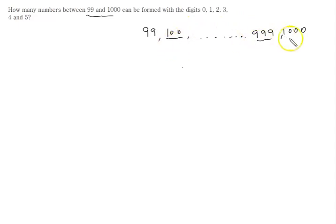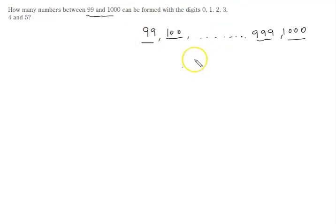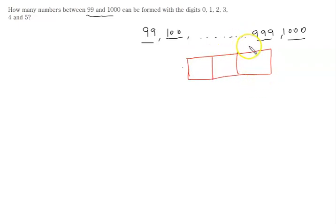So we are talking about three-digit numbers. We can give three compartments for a three-digit number, and we can write the names of the places: ones place, tens place, and hundreds place.